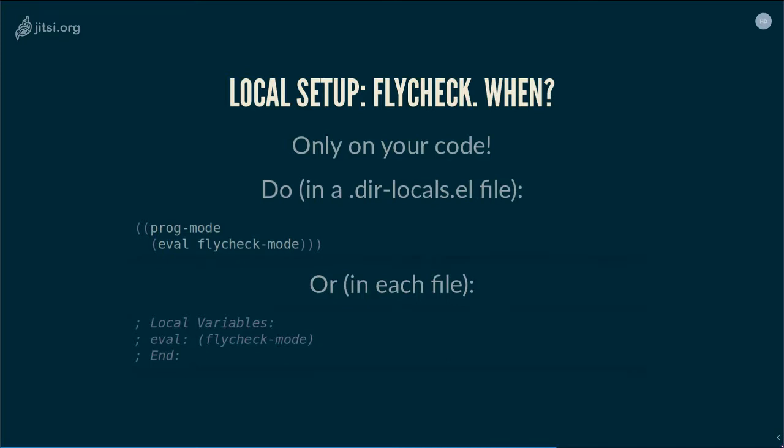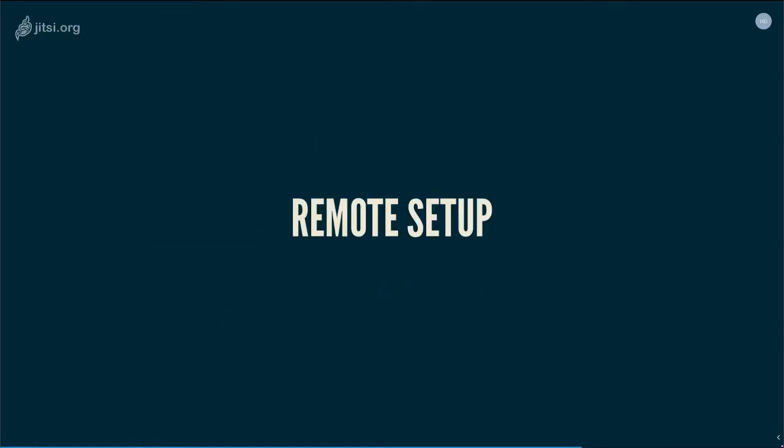Instead, only start FlyCheck when you want the underlines. Only run FlyCheck on your own code. For example, you can have a dir-locals file in your projects so that FlyCheck runs on every prog-mode file there, or you can enable it per-file with a local variable.